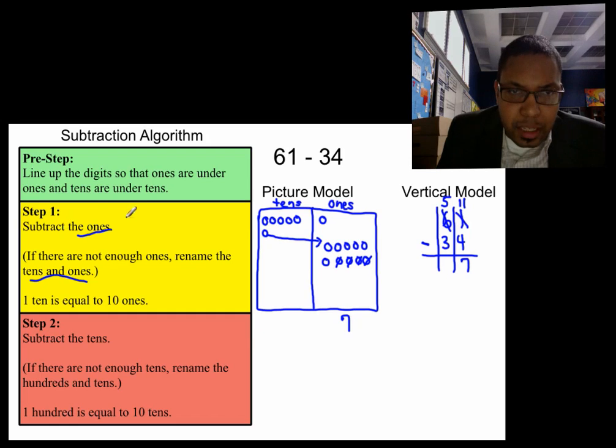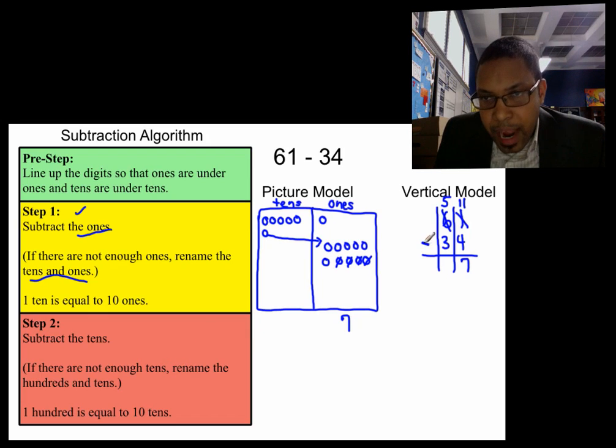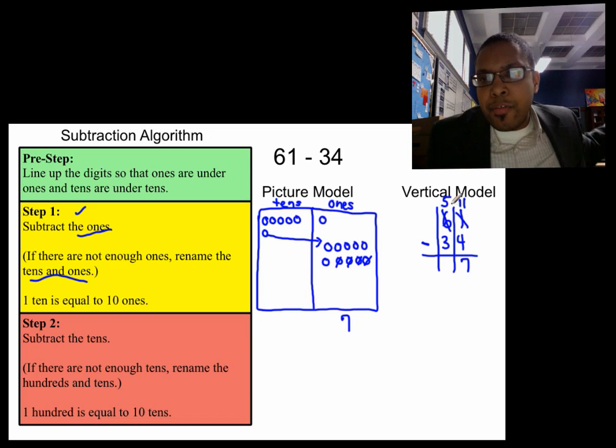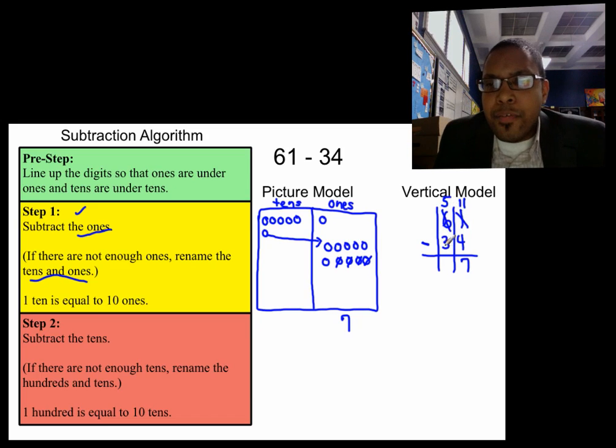Next, we've subtracted the ones. Check. Now we subtract the tens. Let's check to see if there are enough tens. I'm trying to subtract three tens. Do I have enough tens to subtract three tens from? Yes. So I have five tens. I can subtract three from that. Let's do that. Subtract three from five.